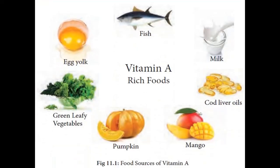Here are the images of food items that are rich in vitamin A. Fish, milk, cod liver oil, mango, pumpkin, green leafy vegetables, egg yolk are some of the food items that are rich in vitamin A.